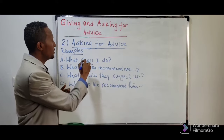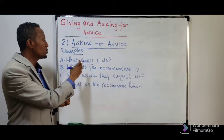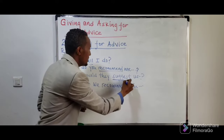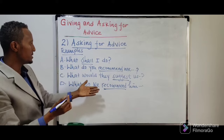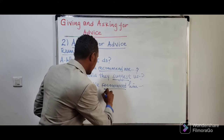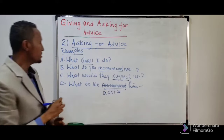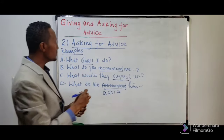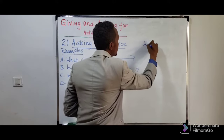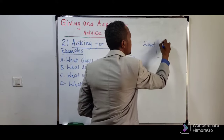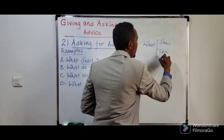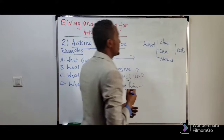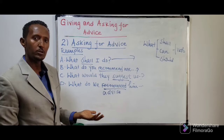So these are the expressions. We can use 'shall': 'What shall I do?' 'What can I do?' 'What should I do?' — these are all the same. 'What do you recommend?' Here we have 'recommend,' 'suggest,' and 'advise.' You can replace one with another. So: 'What should I do in order to pass the exam? In order to become successful in life?'